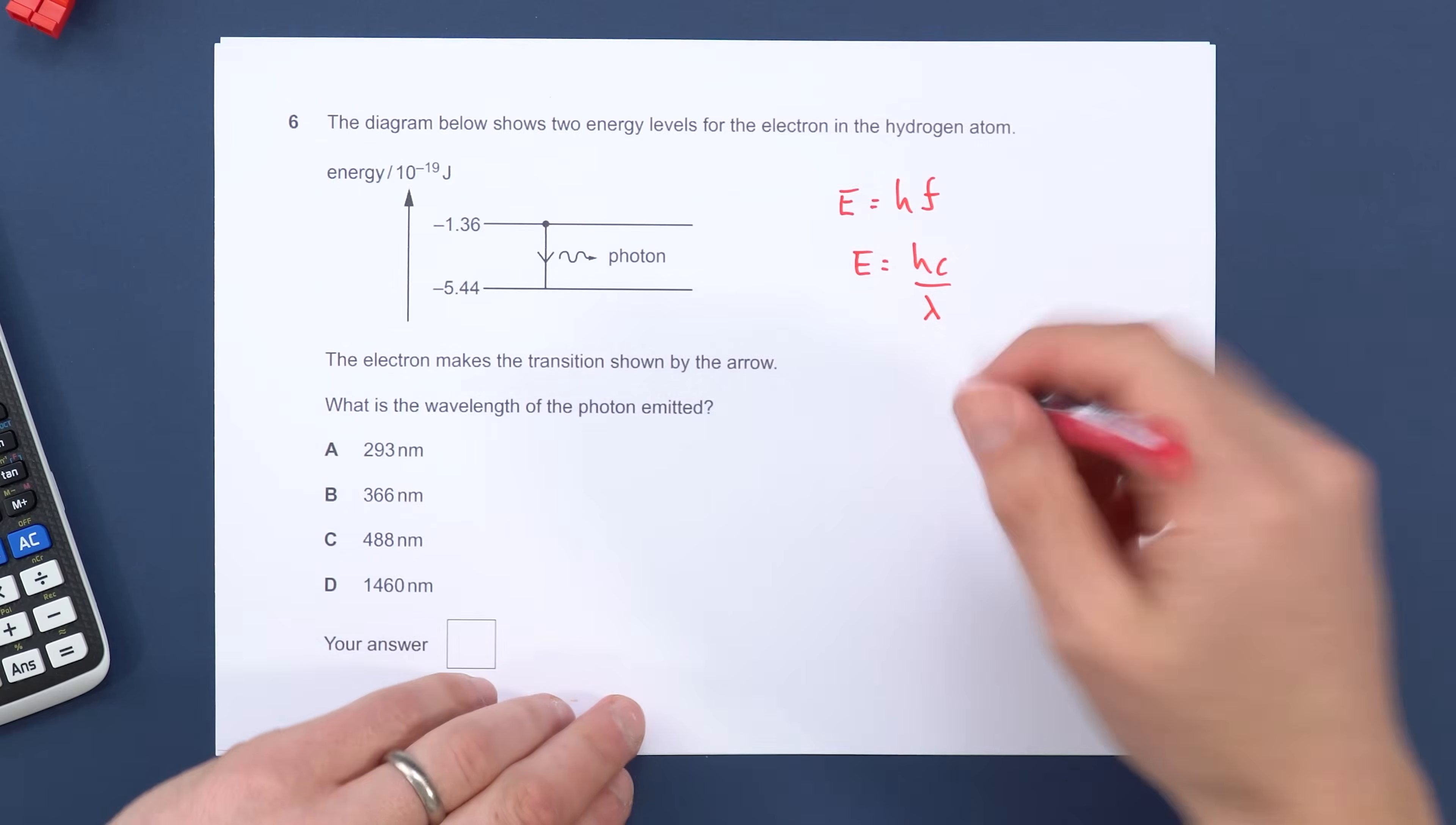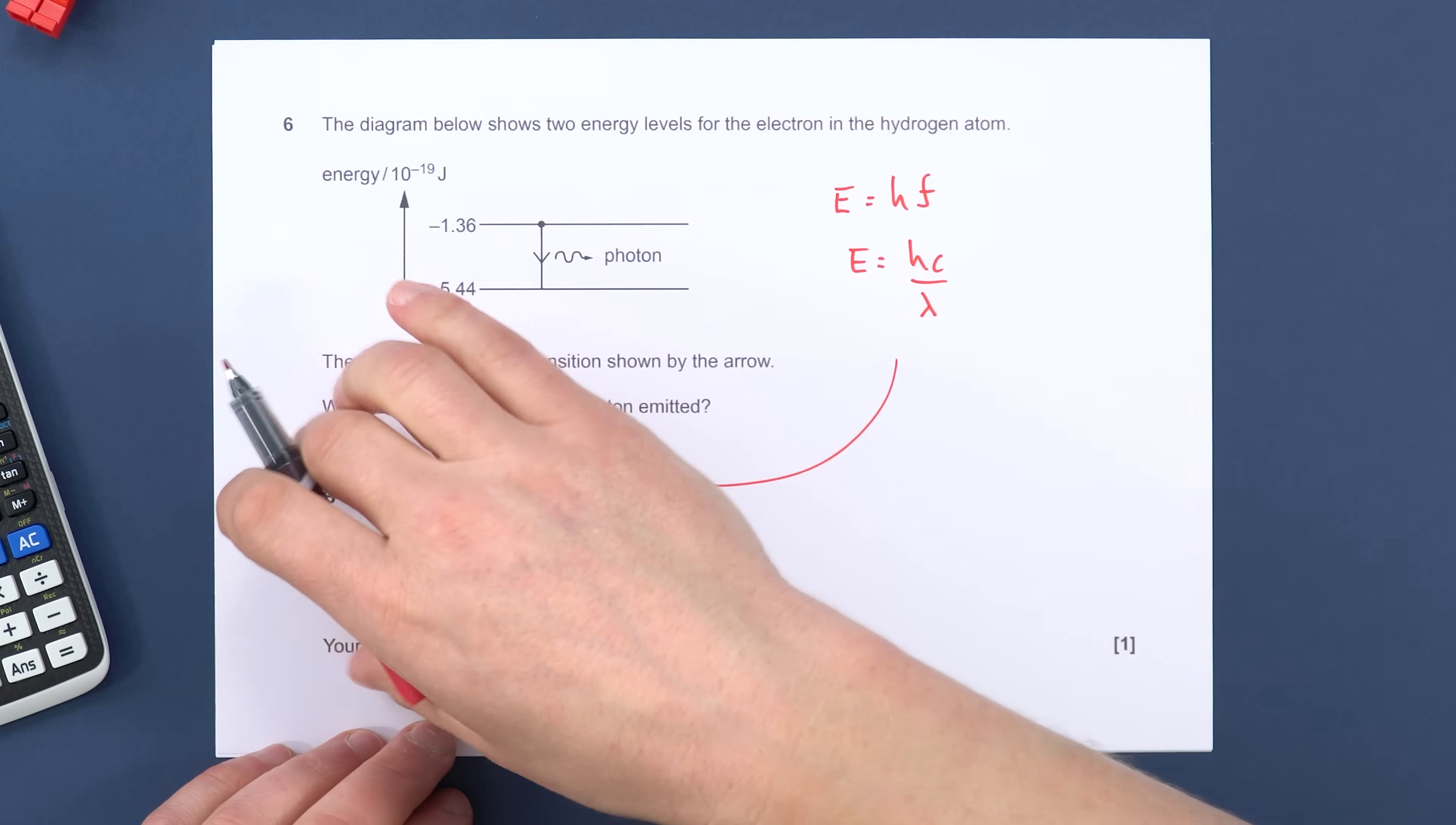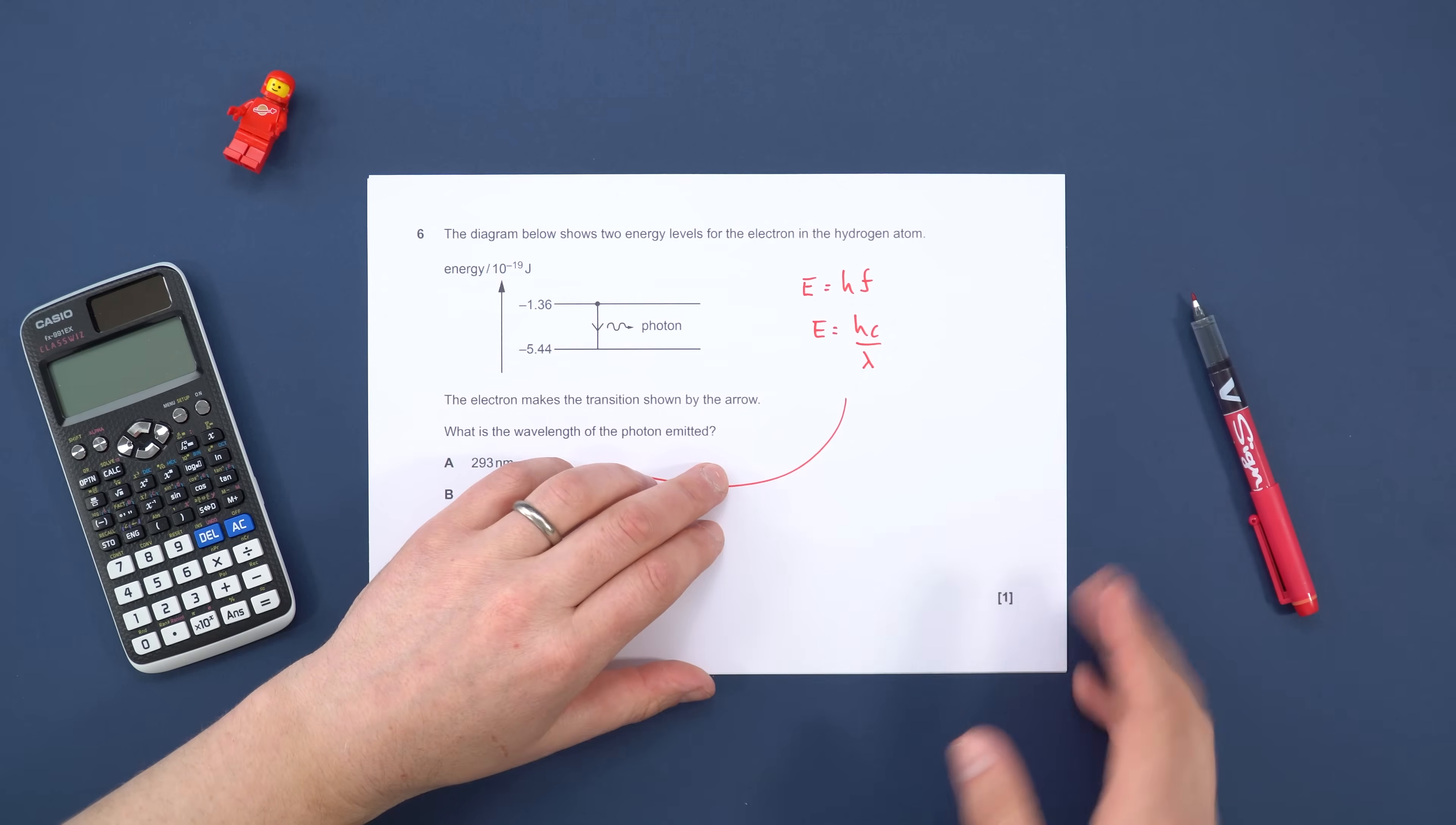Even though nobody's ever going to mark this work, you still need to start out by just doing the basic physics that you've been taught many times. Write down the equation, show your working out, and if you do that, you will then get a number which you can then check with the answers over here, rather than being swayed by what the answer is before you've calculated it. For these questions, there's not really any particular technique. You just need to understand the subject that you're being assessed on.